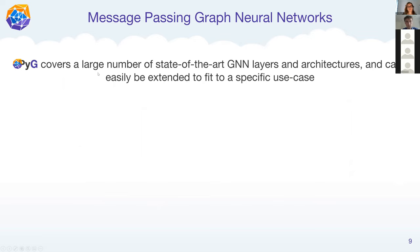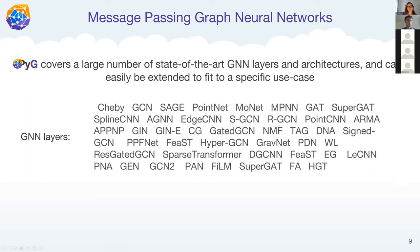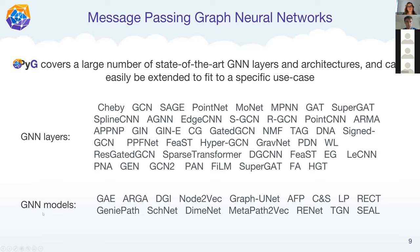PyG covers a large number of state-of-the-art GNN architectures which can be called as easily as any PyTorch module, with minimal effort needed for existing GNN layers. GNN models are torch modules built on top of these layers. For example, DGI is a semi-supervised GNN framework that internally uses different message passing schemes like GCNConv, and additionally defines its own loss function and objectives to train the self-supervised GNN framework end-to-end.